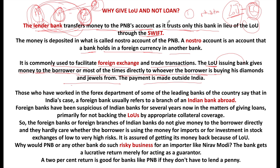Foreign banks or foreign branches of Indian banks do not give money to the borrower directly and hardly care whether the borrower is using the money for imports or for stock market investment. They are assured of getting their money back from the original bank issuing the LOU — they trust the LOU, not the person. In this case, the Paris Bank is not bothered whether Nirav Modi actually uses the money to buy diamonds.